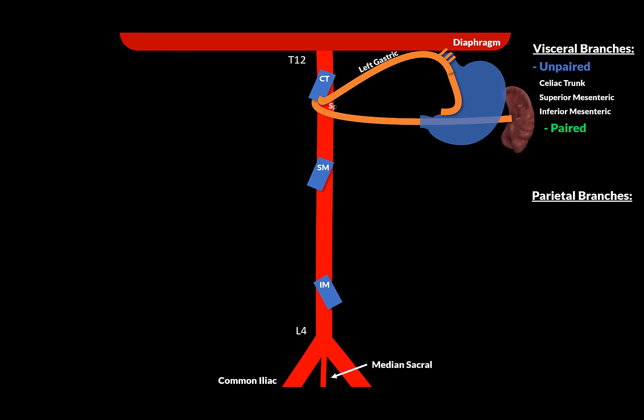Then there's the splenic artery, going horizontally straight to the spleen to supply it, going behind the stomach. This one does have side branches. The splenic artery gives off branches for the pancreas called the pancreatic branches, supplying the tail and the body of the pancreas. There's the short gastric artery going upwards to the fundus of the stomach, and then there's the gastro-omental branch that descends along the greater curvature of the stomach, supplying the stomach and the omentum major — hence the name gastro-omental artery, since it supplies the stomach and the greater omentum.